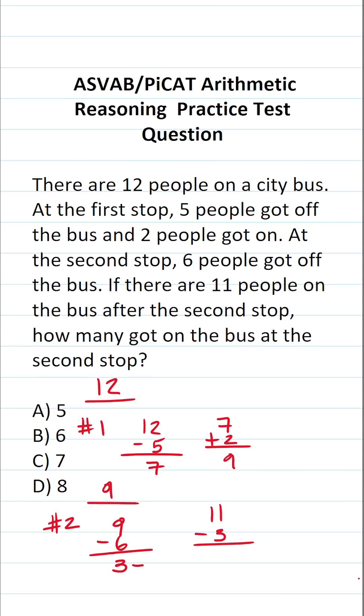we're going to do 11 minus three, which is going to be eight. So that means eight people got on the bus at the second stop. So this one is D.